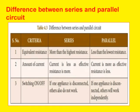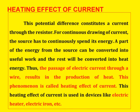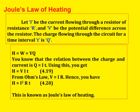Next, the heating effect of current. A potential difference constitutes a current through the resistors. A part of the energy from the source is converted into useful work and the rest is converted into heat energy. The passage of electric current through the wire results in the production of heat — this phenomenon is called the heating effect of current. This heating effect is used in devices like electric heater, electric iron, etc. Joule's law of heating: Let I be the current, R the resistance, V the potential difference, and Q the charge flowing through the circuit for a time interval T. Then H = W = VQ, and the final formula is H = I²RT. This is known as Joule's law of heating.